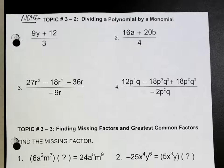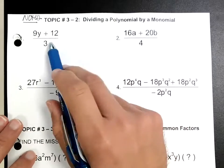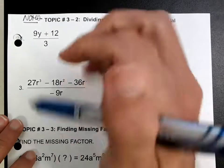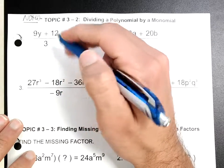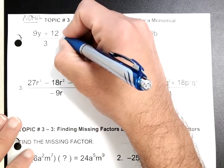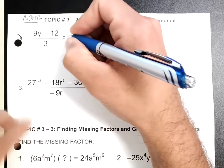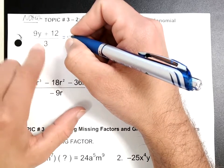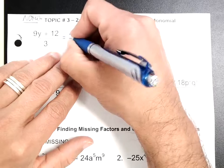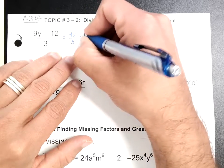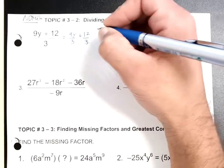Alright guys, so this is the notes for Friday. On this one I think you'll find it easier. We're trying to divide a polynomial by a monomial. So all we're trying to do is divide this right here by 3. What you do is something we've actually done in the past — when you divide two terms by just one number, you divide each one of those terms by that number.